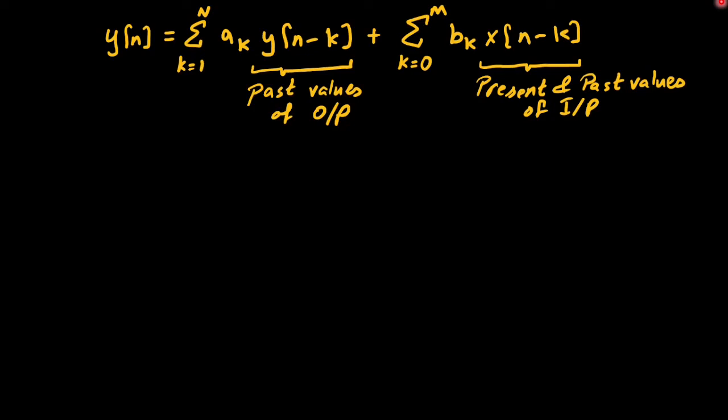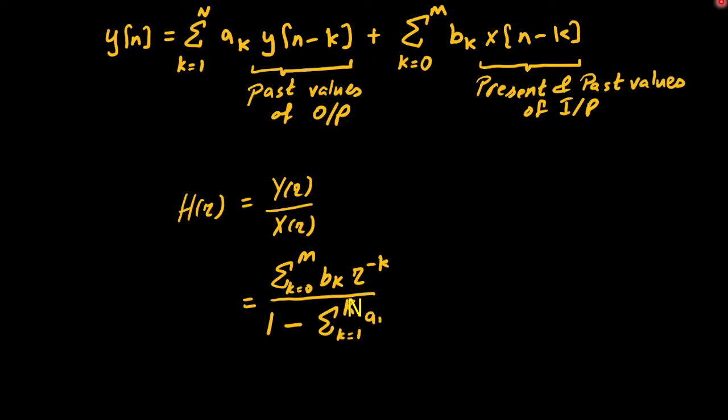Bringing the output values to the left side while keeping the input on the right side plus taking the z transform yields the system function which is simply y of z over x of z and that is h of z. And this is equivalent to the summation from k zero to m coefficients bk z to the power minus k. And in the denominator, we have 1 minus summation from k equal to 1 to n ak z to the power minus k. So in the numerator, we have zeros and in the denominator, we have poles.